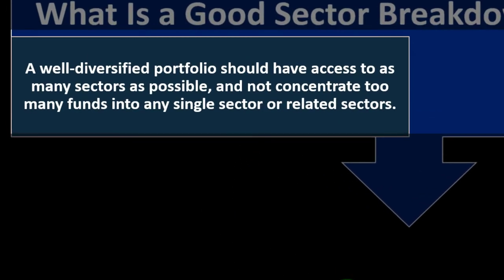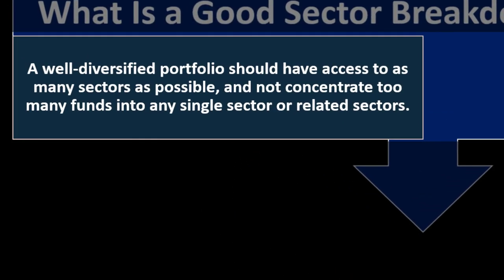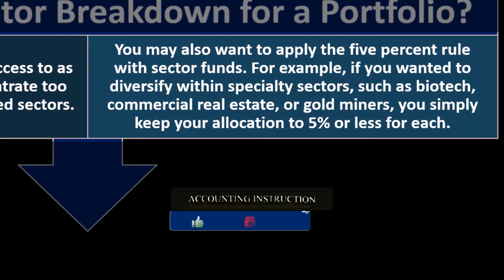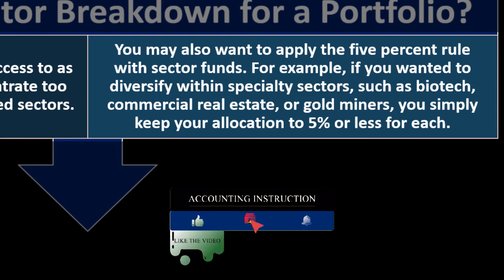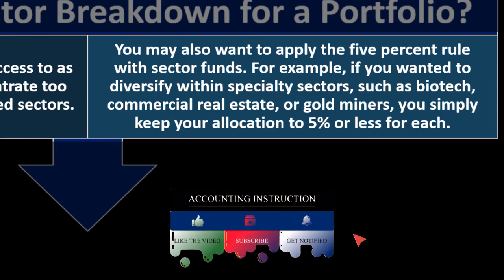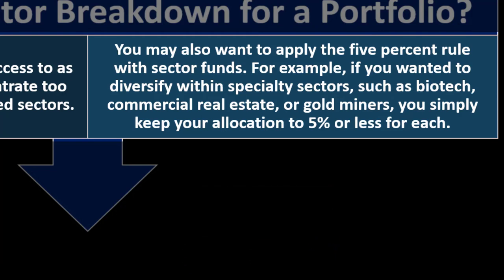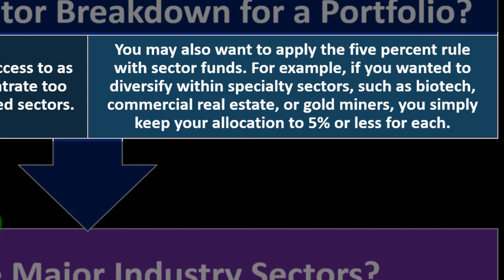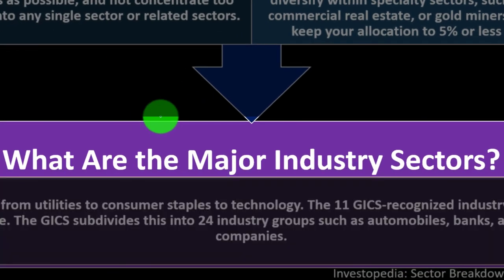What is a good sector breakdown for a portfolio? A well-diversified portfolio should have access to as many sectors as possible and not concentrate too many funds into any single sector or related sector. You may also want to apply the five percent rule with sector funds — for example, if you want to diversify within specialty sectors such as biotech, commercial real estate, or gold miners, simply keep your allocation to five percent or less for each.